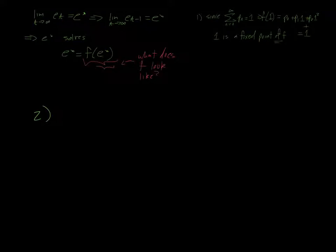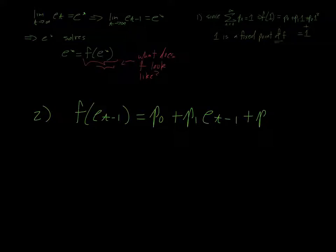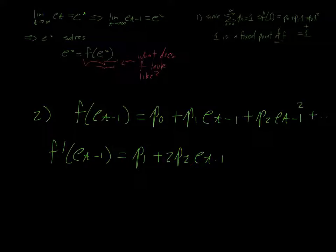Another thing to notice is that if you look at F of E sub T minus 1, as a function of E sub T minus 1, we can look using calculus and the fact that this is a convergent power series at some properties of this. For example, F prime of E sub T minus 1 is going to be P1 plus 2P2 E sub T minus 1 plus another bunch of positive terms. So we do know that this thing is an increasing function.